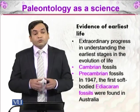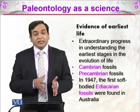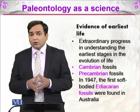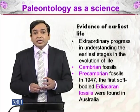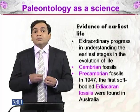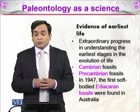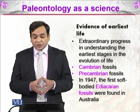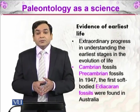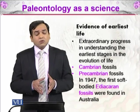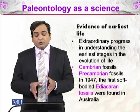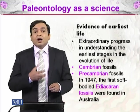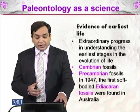We have made extraordinary progress in understanding the earliest stages in the evolution of life. Through the advent of electron microscopy and various other techniques, we can see the earliest life forms — microbial life — and the fossils of microbial life. We can see Cambrian fossils. Cambrian is an era in geological history, and we can also see pre-Cambrian fossils; these Ediacaran fossils were found in Australia in 1947. All of these fossils gave us a window to the evidence of earliest life.